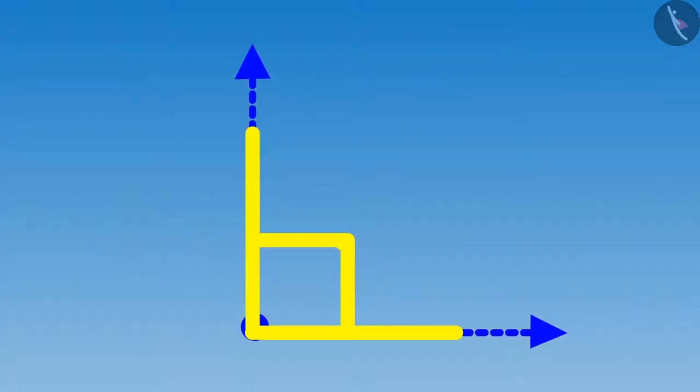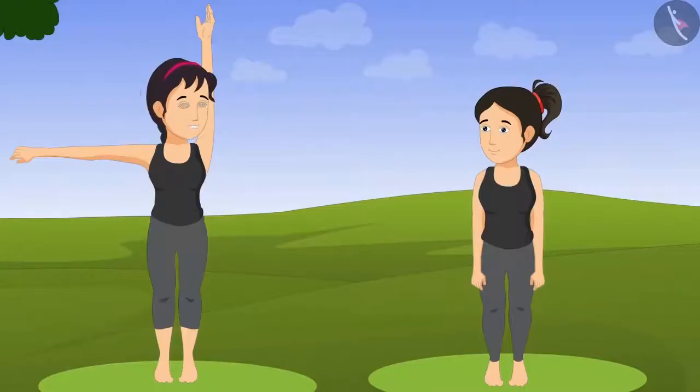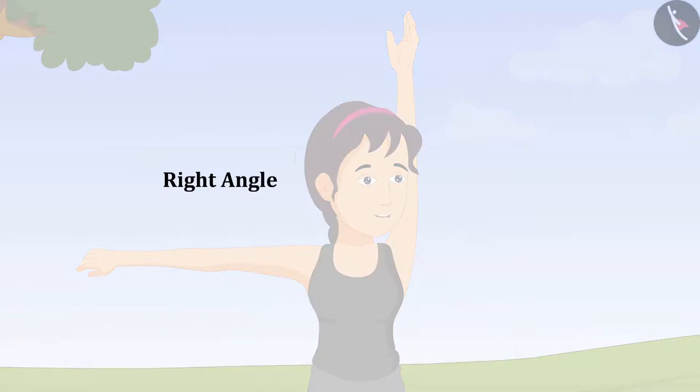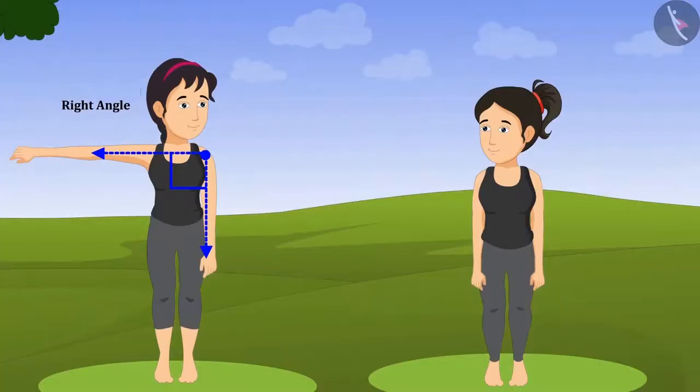Hey, Didi. This looks like the letter L. I will also make a right angle. Very good, Riva. So then tell me whether this is also a right angle? Yes, Didi. This is also a right angle. Here also a vertical line and a horizontal line are joined together. Okay, this means can angles be formed in any directions? Yes, Riva.